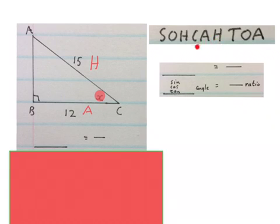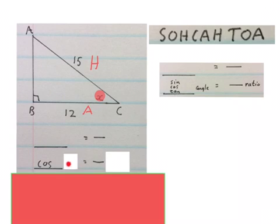I go into SOHCAHTOA and I see who uses A and H, and I can see here, I see A and H, and that is cos. Alright, cos. Next, I will fill in the angle I'm looking for, in this case it is the angle at C, and then I'll write in the ratio of cos from here, and I will replace them by the numbers that I have over here.